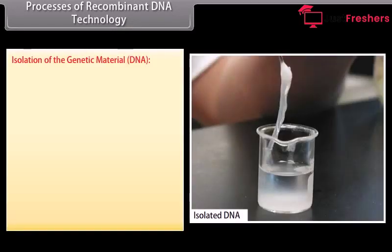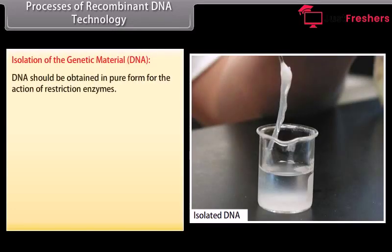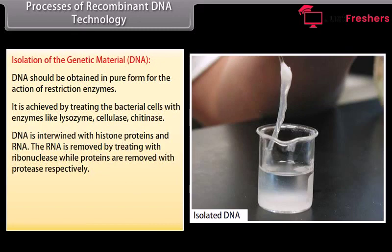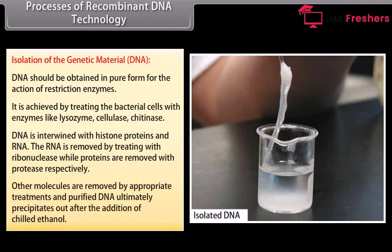Isolation of the genetic material — DNA. DNA should be obtained in pure form for the action of restriction enzymes. It is achieved by treating the bacterial cells with enzymes like lysozyme, cellulase, and chitinase. DNA is intertwined with histone proteins and RNA. The RNA is removed by treating with ribonuclease while proteins are removed with protease. Other molecules are removed by appropriate treatments, and purified DNA ultimately precipitates out after the addition of chilled ethanol.